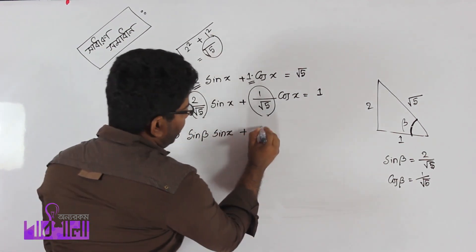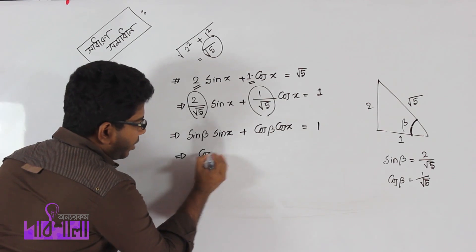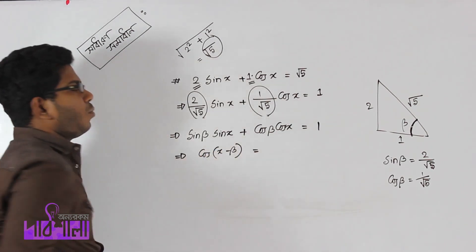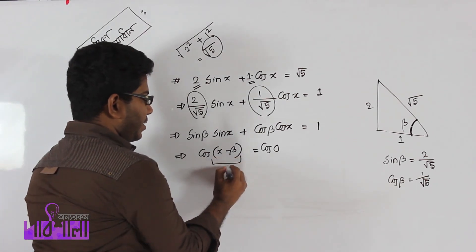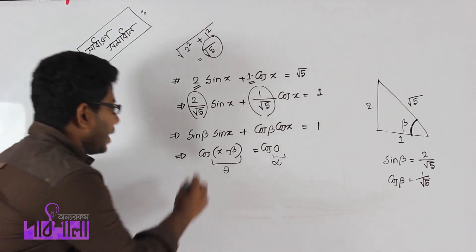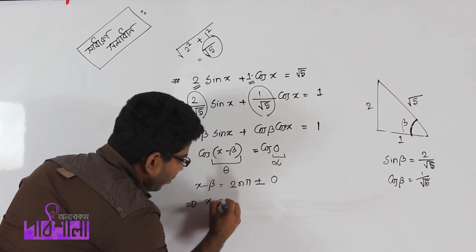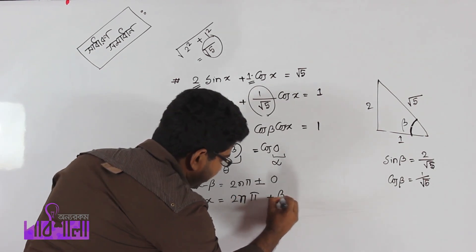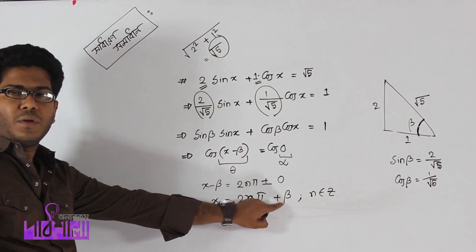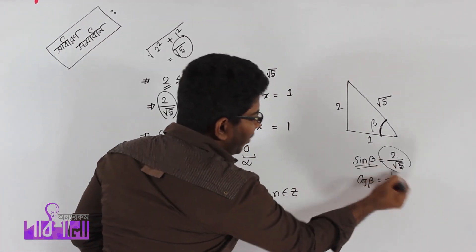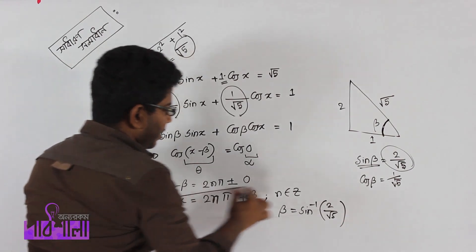This becomes sin beta · sin x plus cos beta · cos x equals 1, which is cos(x minus beta) equals 1. The general solution is x equals 2nπ plus beta, where n belongs to integers, and sin beta equals 2 by root 5, so beta equals sin inverse of 2 divided by root 5. This is the answer.